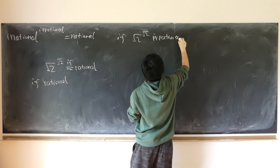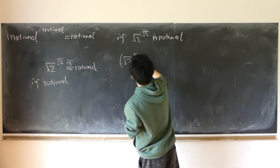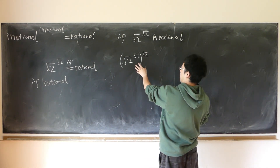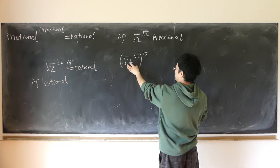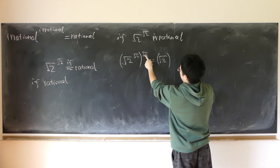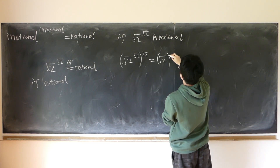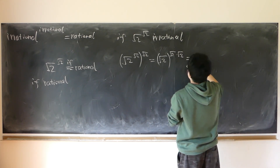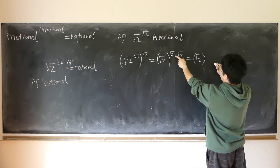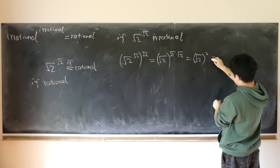If it's irrational, let's look at square root of 2 to the power of square root of 2, all raised to the power of square root of 2. By the exponential rule, we multiply the two powers together: square root of 2 times square root of 2 gives us 2. So we get square root of 2 raised to the power of 2, which is just 2.